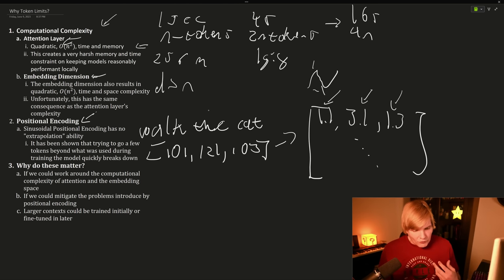And so why do these matter? Well, if we could work around this computational complexity, especially of our attention and embedding space, then we could kind of trivially at least train or use higher token counts.